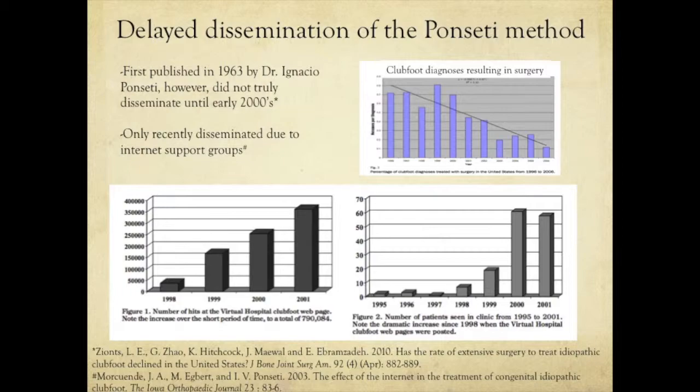Despite the high quality and low cost of Dr. Ponseti's technique, he experienced a very delayed dissemination. He published it in 1963, but it didn't really take off within the orthopedic community until the early 2000s. These are the number of patients seen in the University of Iowa's clinic from 1995 until 2001 — you'll see a dramatic increase around 2000 and 2001. That slide shows the number of hits to the virtual hospital webpage, which directly increased during that same time period.